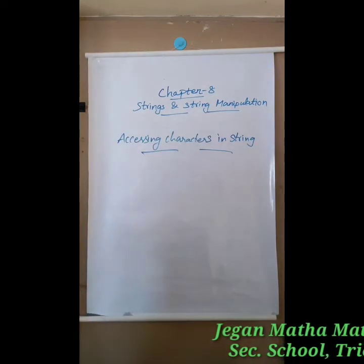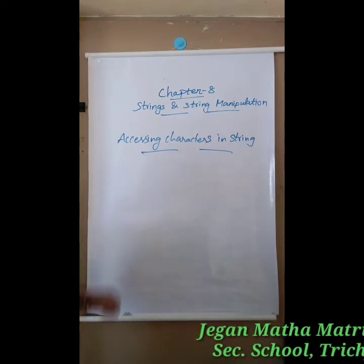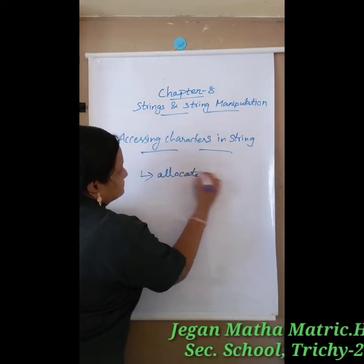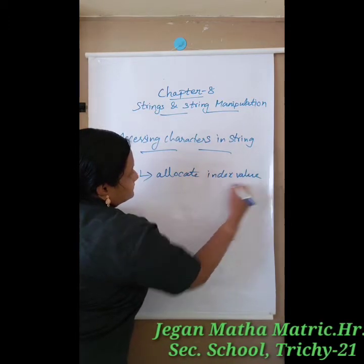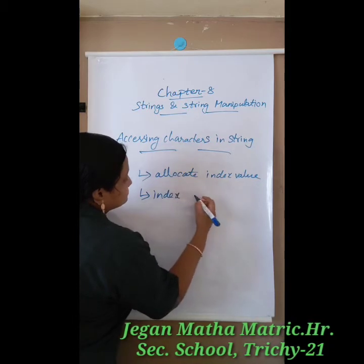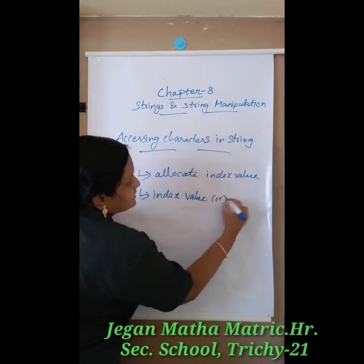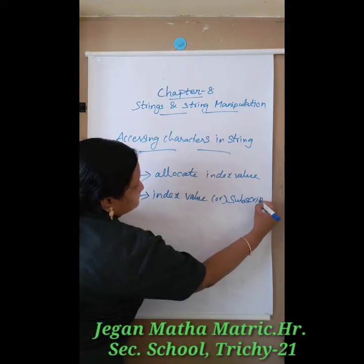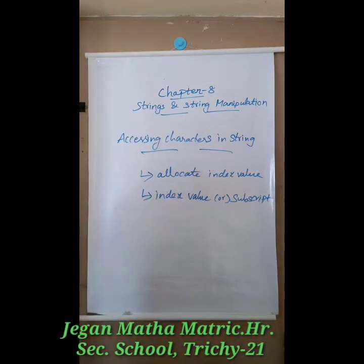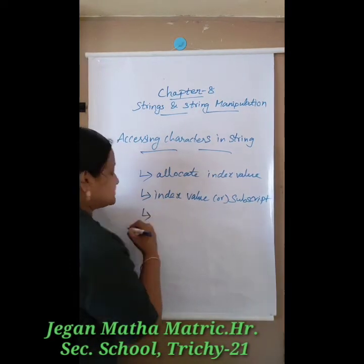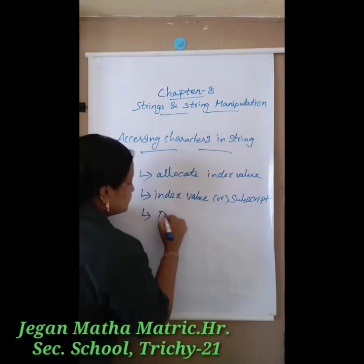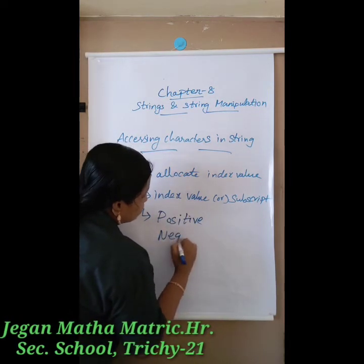Accessing characters in a string: once you define a string, Python automatically allocates an index value for each character. This index value is also called a subscript. The subscript is used to access and manipulate the string. It can have two types of values: a positive integer number and a negative integer number.